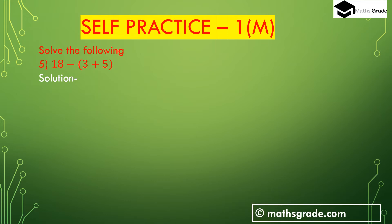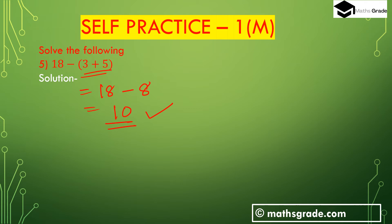Now question number 5: 18 minus (3 plus 5), where 3 plus 5 is inside the bracket. First we have to calculate the addition inside the bracket: 3 plus 5 is 8. Then 18 minus 8 is 10. So the answer is 10. So 18 minus (3 plus 5) is 10.